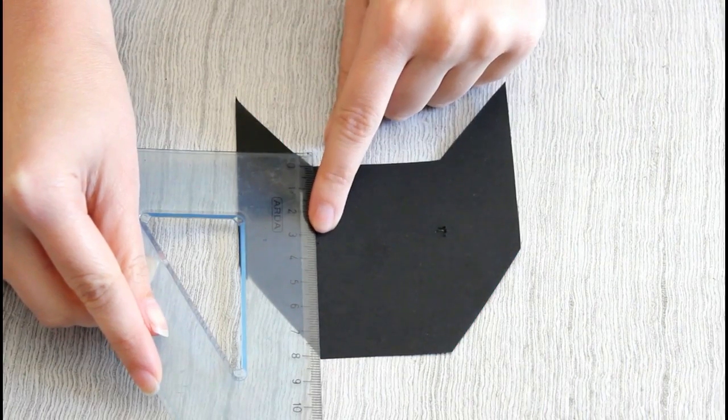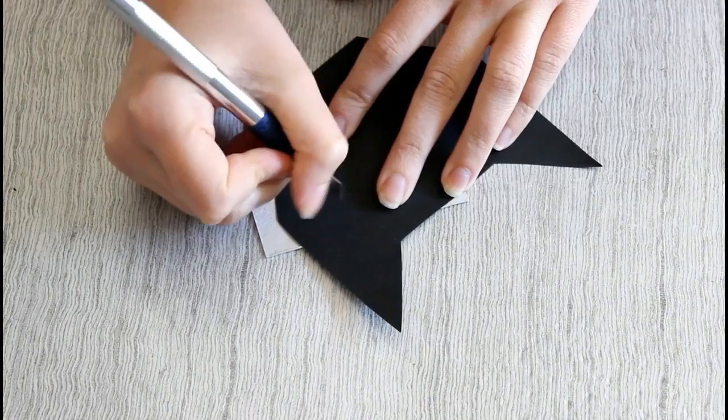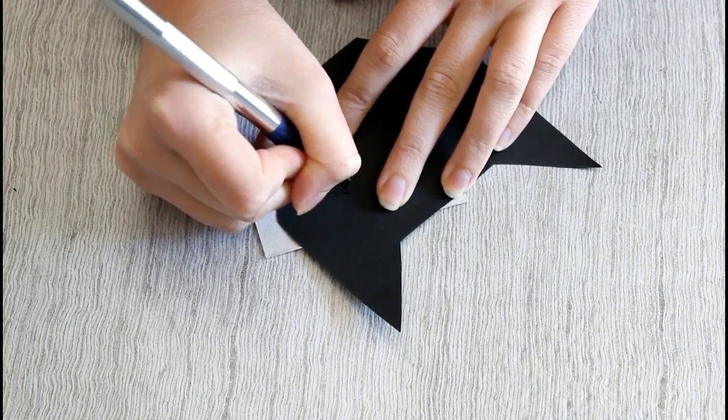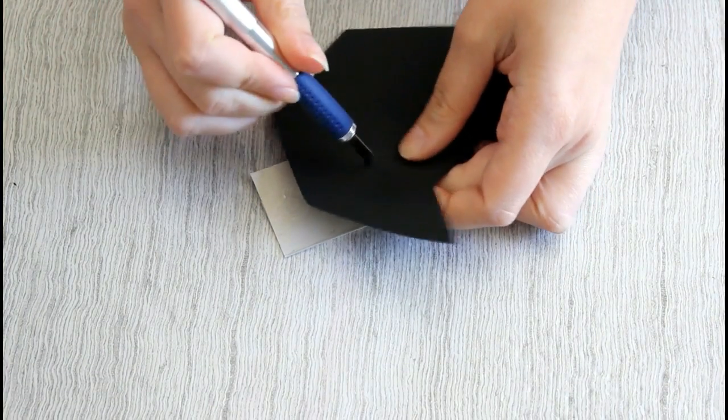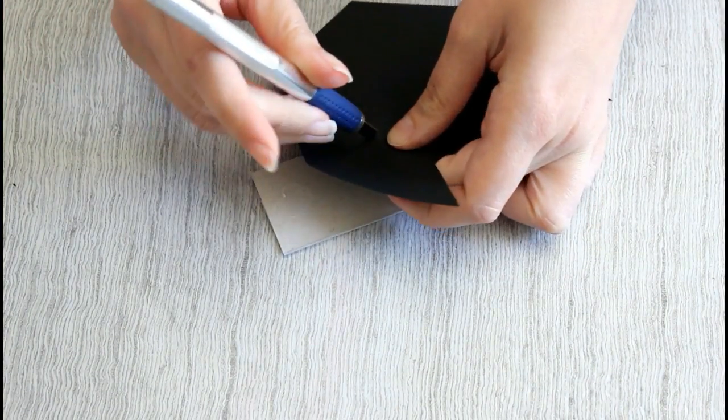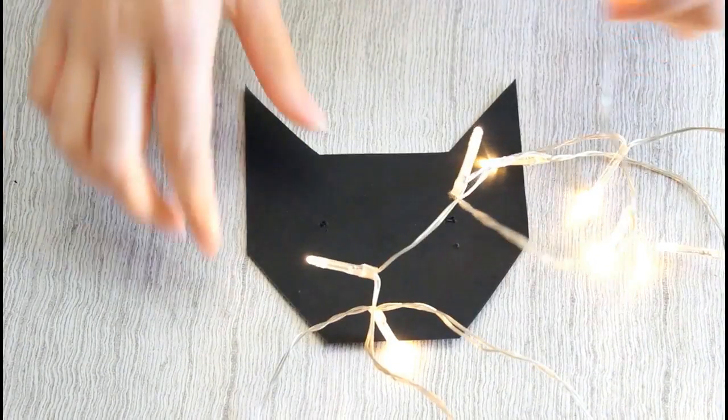Next, I'm going to make two holes for the cat's eyes at 3 cm from the top of the head. I just have to place the LEDs of the garland in the cat's eyes.